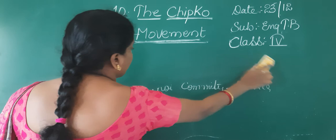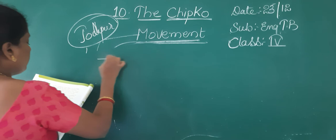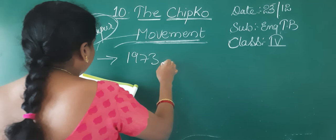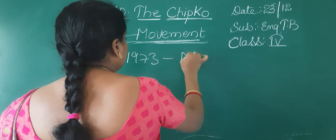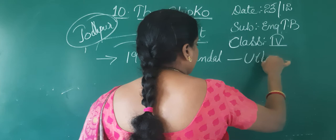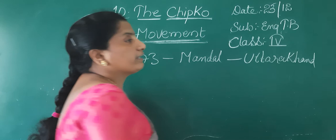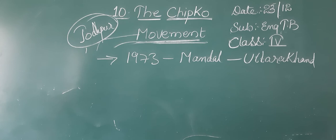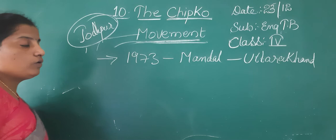See children, the Chipko movement spontaneously took place — this is very important. The Chipko movement took place in 1973 in the village of Mandal in Uttarakhand. Where does the Chipko movement start? Chipko movement started in 1973 in a village named Mandal in Uttarakhand.